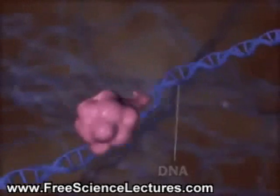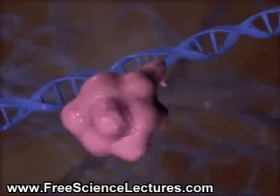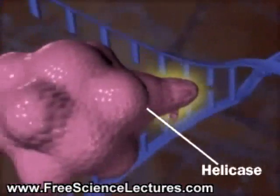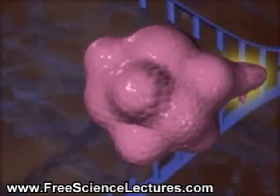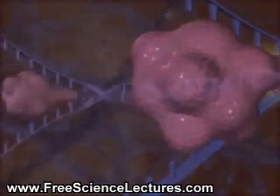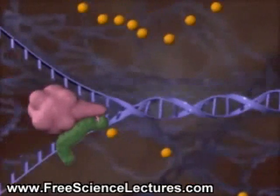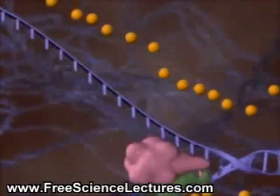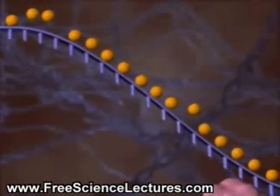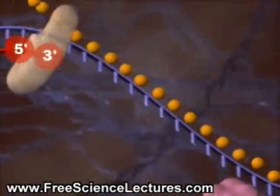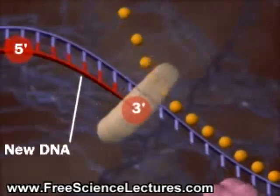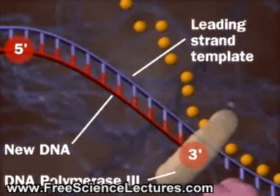When DNA replicates, its strands are separated by the enzyme helicase. Single-stranded DNA binding proteins keep the strands from re-annealing. One DNA strand encodes the leading strand, which forms from its 5' to its 3' end using DNA polymerase 3.